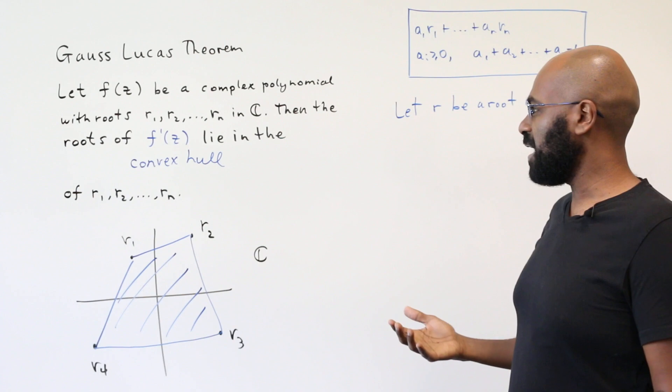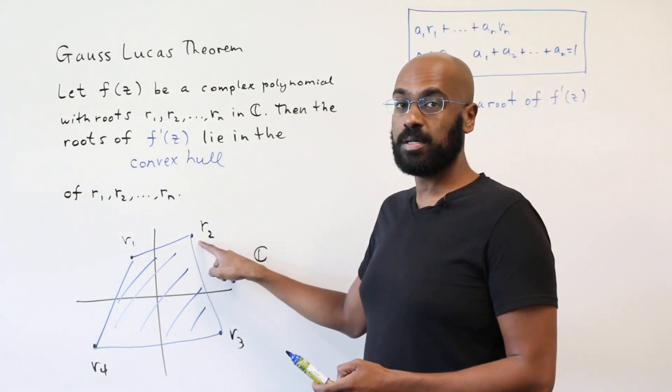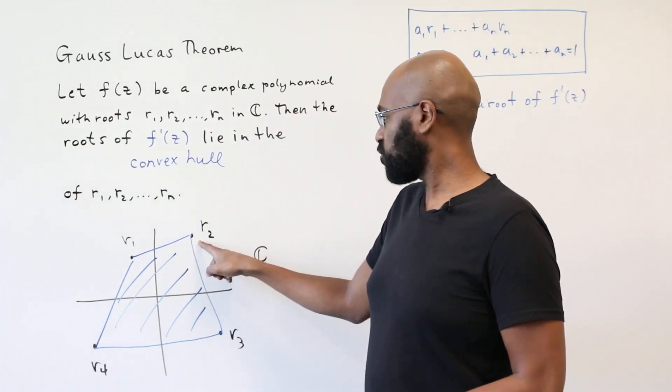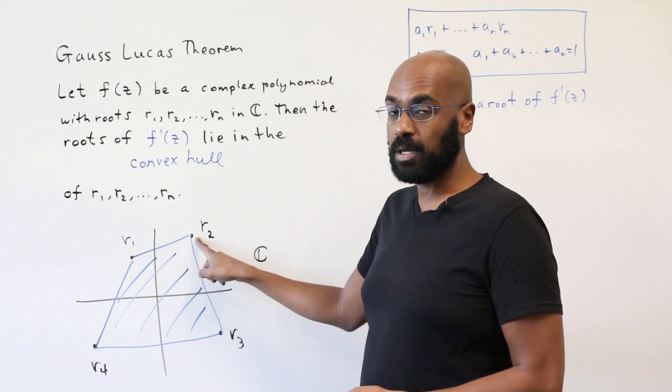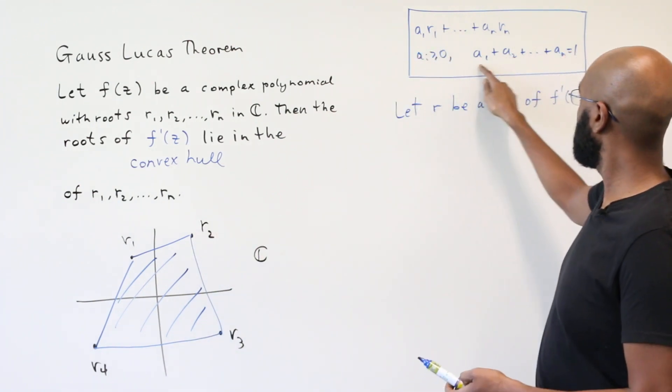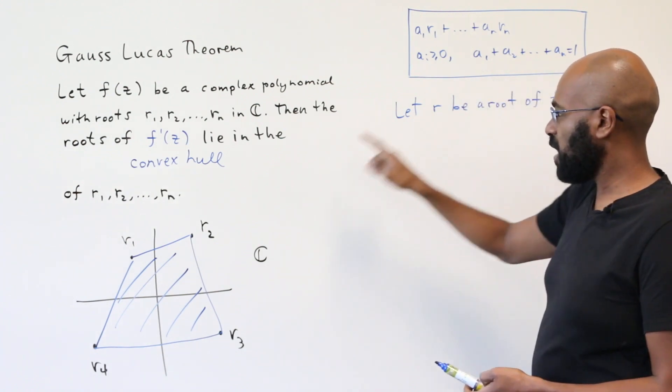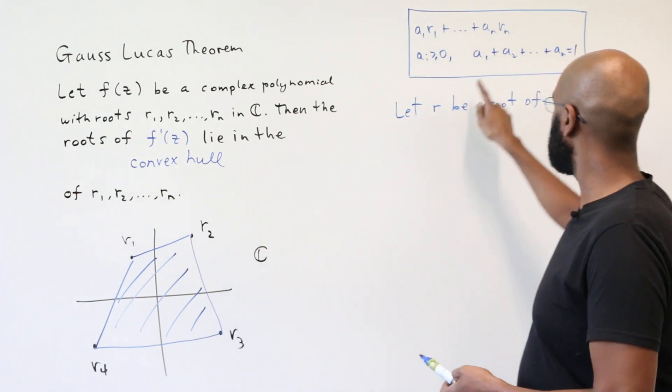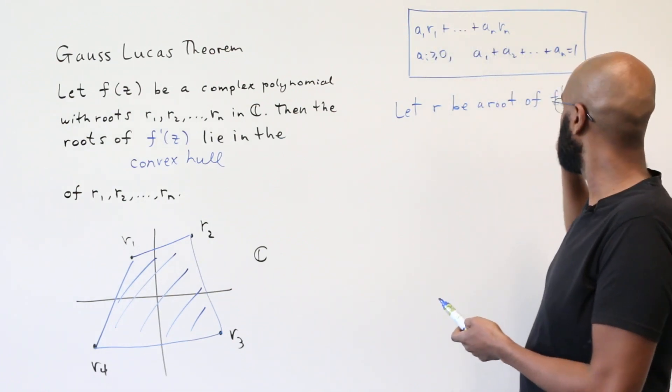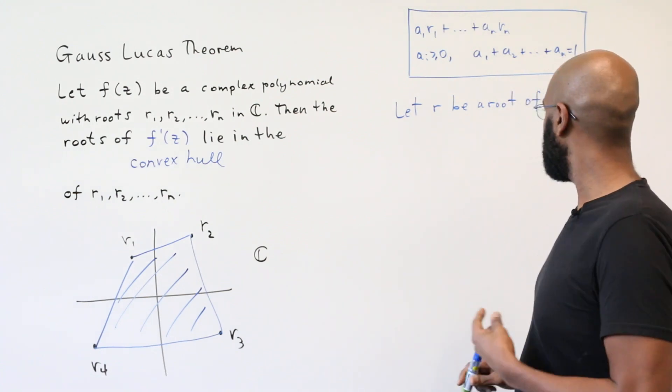If r was a root of f, let's say for example that r was r2, then r is automatically in the convex hull of the points r1 through rn. It's actually exactly one point in the convex hull, r2 itself. Or if you wanted, you could use what we talked about here to say that we can write r, which is r2, as 0r1 plus 1r2 plus 0 times the rest of the roots, and those coefficients add up to 1.